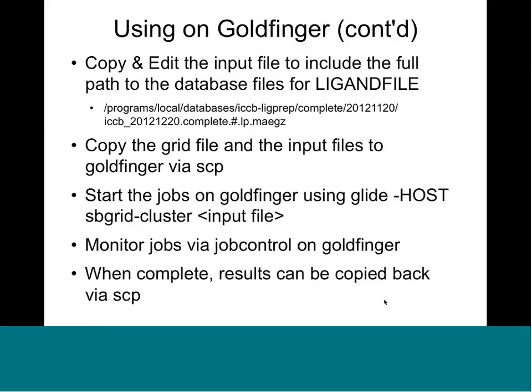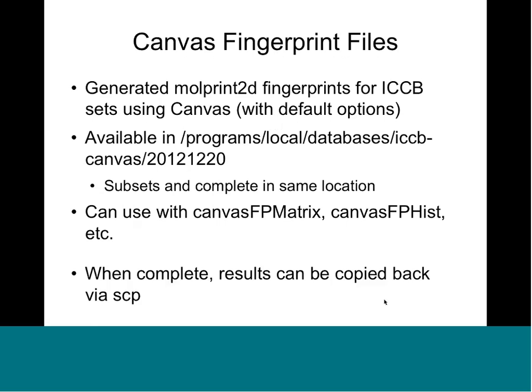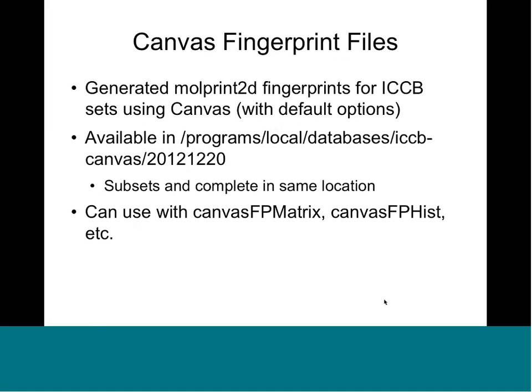That's about it for running docking on Goldfinger. It's pretty straightforward, though a little inelegant because of the copying back and forth — we may have a procedure to help with that soon. The other thing we do is we generated binary fingerprints for the same ICCB dataset using Canvas. In this case we generated the MolPrint 2D fingerprints, which seem to work best for many general purposes. There's a Schrodinger publication on fingerprint performance that recommends this fingerprint type — that's what we've prepared.